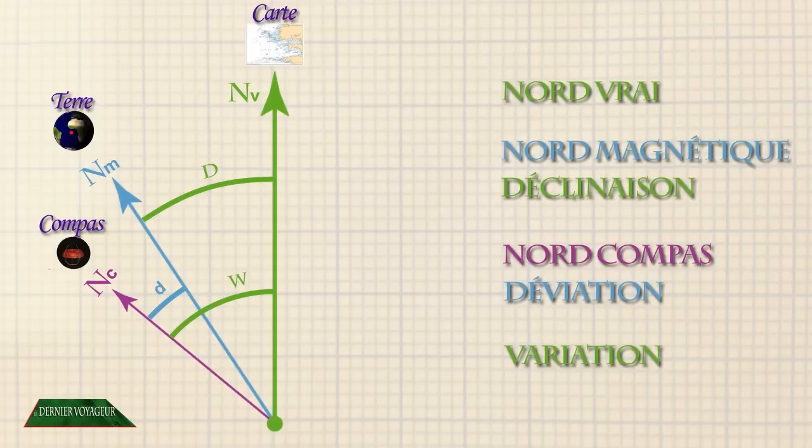Voyons maintenant sur notre représentation graphique les différents cas de figure possibles. Nord magnétique à l'ouest du nord-vrai, déclinaison négative, déviation négative, variation négative.